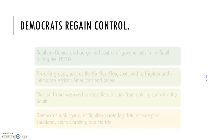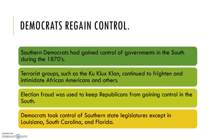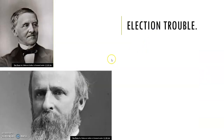Southern Democrats had gained control of governments in the South during the 1870s. Terrorist groups such as the Ku Klux Klan continued to frighten and intimidate African Americans and others. Election fraud was used to keep Republicans from gaining control in the South. Democrats had control of Southern state legislatures except in Louisiana, South Carolina, and Florida — remember those three states, as they'll play a very important role.